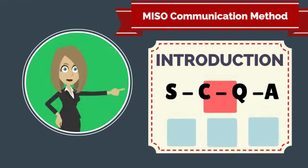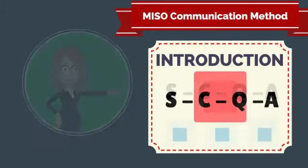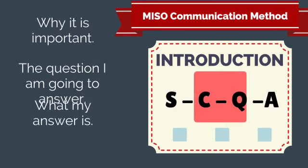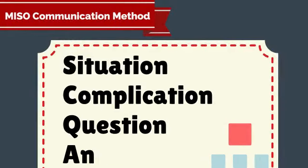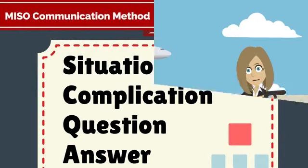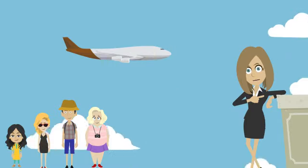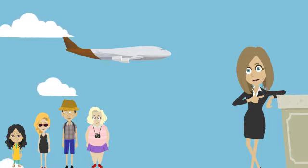The top of the pyramid, the introduction, includes your key message presented according to what is referred to as the SCQA format. Your introduction will make clear what you are going to talk about, why it is important, what problem you are going to answer, and what your answer will be. SCQA stands for Situation, Complication, Question, and Answer. Let's look at each in more detail. For the sake of simplicity, let's use an everyday example: you are influencing your family or friends to take a European vacation.